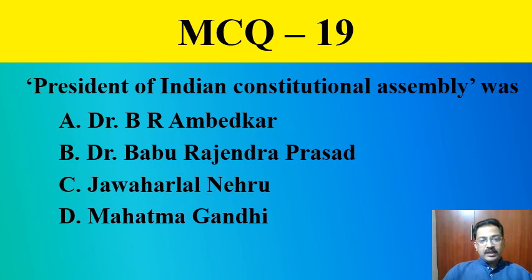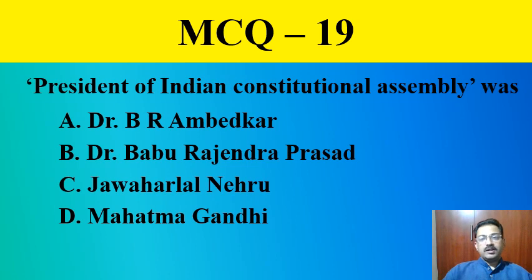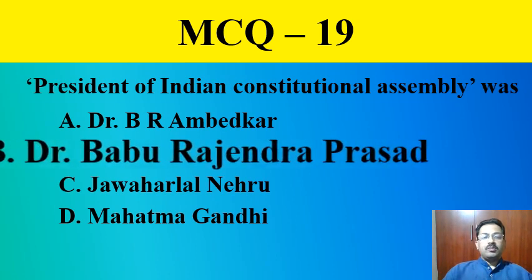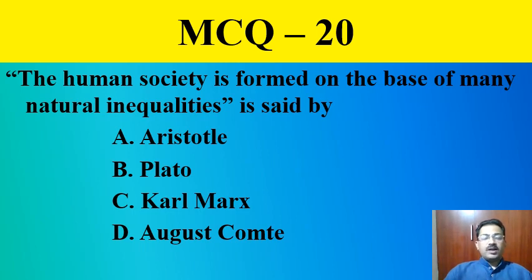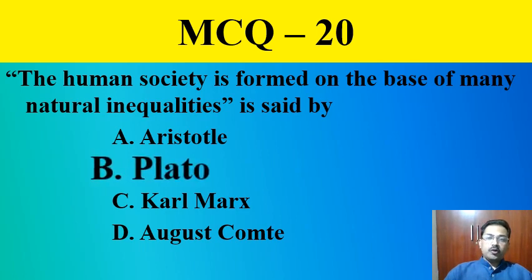MCQ question number nineteen: The president of the Indian Constitutional Assembly was — Barambekta, Babu Rajendra Prasad, Jawaharlal Nehru, or Mahatma Gandhi. The correct answer is Dr. Babu Rajendra Prasad. MCQ question number twenty: 'The human society is formed on the basis of many natural inequalities' was said by — Aristotle, Plato, Karl Marx, or Auguste Comte. The correct answer is Plato. Plato said that human society is formed on the basis of many natural inequalities.